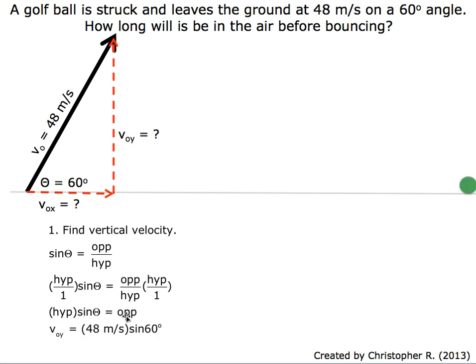Now we put in our numbers. The opposite is the initial vertical velocity, so the hypotenuse is 48 meters per second times the sine of 60 degrees.